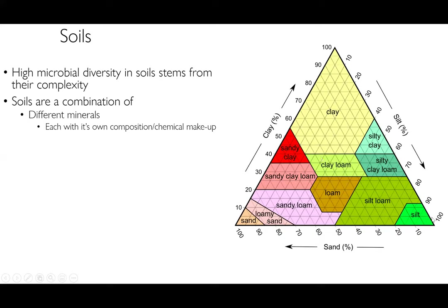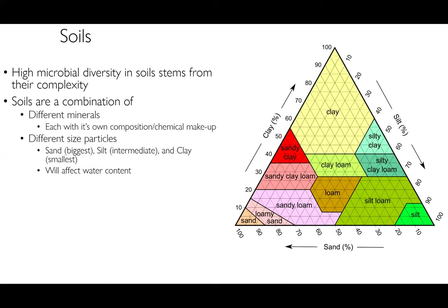Each of these different soil classifications has very different chemical composition, and also very different particle sizes. Sand is the biggest, silt is in between, and clay is very small. The size of these particles is really important for understanding how much water they will hold. When you have smaller particles, this leads to less pore space in between, which means less water. Clayey soils tend to trap water better than sandy soils — if you've ever been at the beach, you know sand has a very poor capacity to hold water.